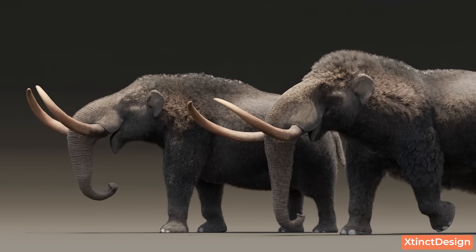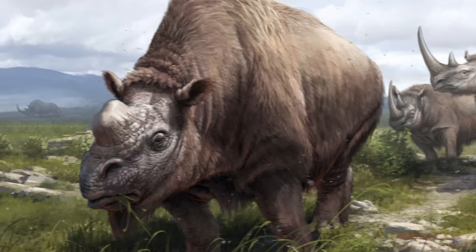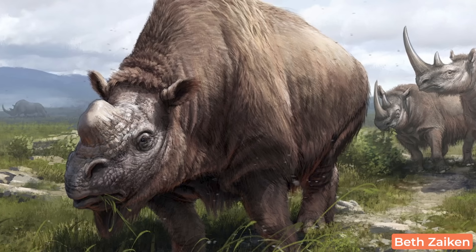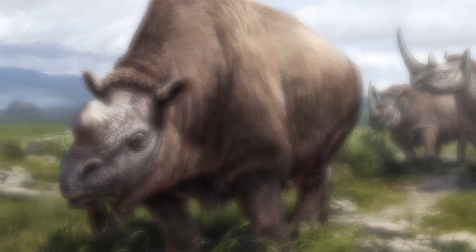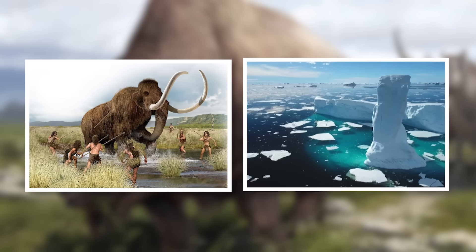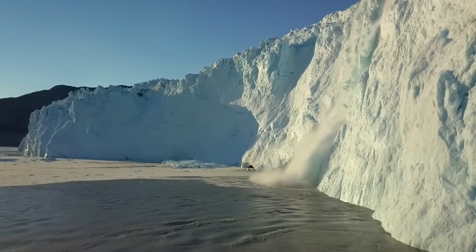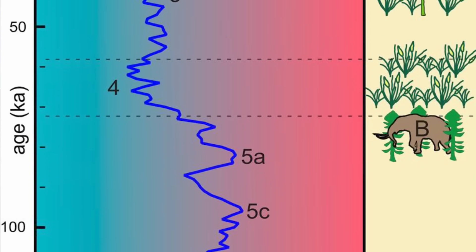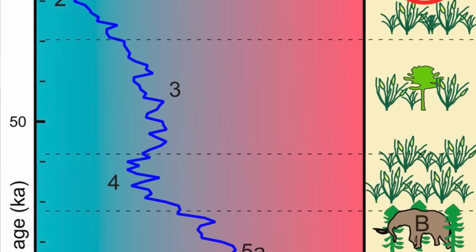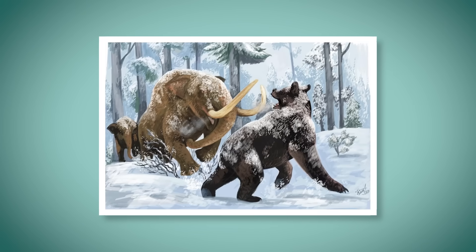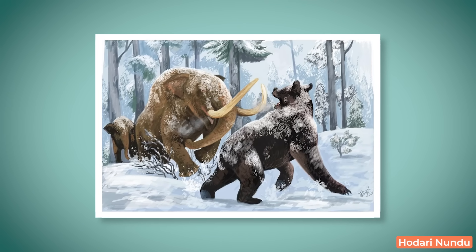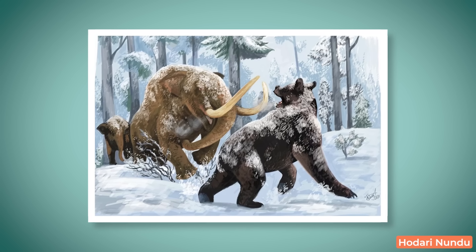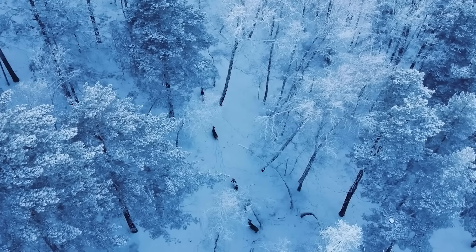Mastodons went extinct around 10 to 11 thousand years ago — yet another victim of the giant megafaunal extinction plaguing the late Pleistocene, an event chalked up to both human hunting and climate change. In terms of climate change, there is a marked pattern of decline tied to the loss of their forested habitats. For example, Mastodons in the far north of the continent died out following a glaciation period around 75,000 years ago, which reduced much of their forest environments.